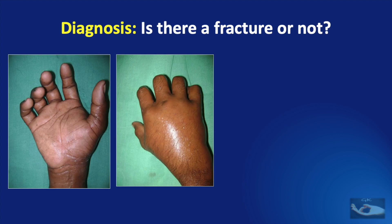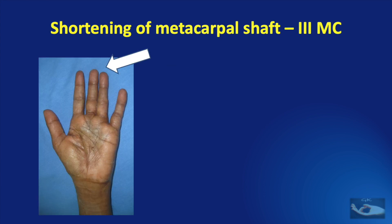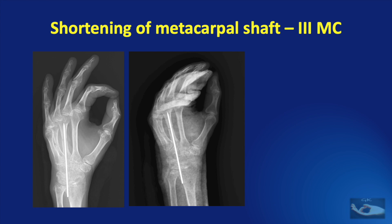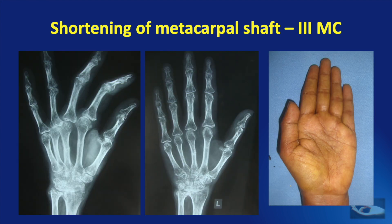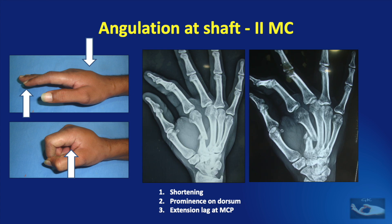Making the diagnosis is simple, but sometimes it is just a swelling that is seen in the hand which may reveal fractures on X-ray. In blunt injuries, we should definitely look for three signs: shortening, angulation, and rotation. In this hand, you can make out a shortening of the middle finger, and that is because of the fracture of the shaft of the third metacarpal bone. Once the reduction and fixation is done, the length of the finger is restored. In this clinical example, you can make out apparent shortening of the index finger, angulation on the dorsum over the second metacarpal bone and extensor lag at the metacarpophalangeal joint of the index finger. All these are typical findings in a shaft fracture of the metacarpal.